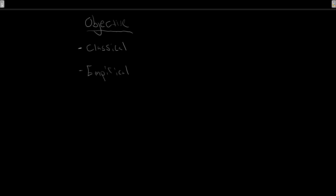Our focus is going to be objective probability. Underneath objective probability, we have two types: classical probability and empirical probability.